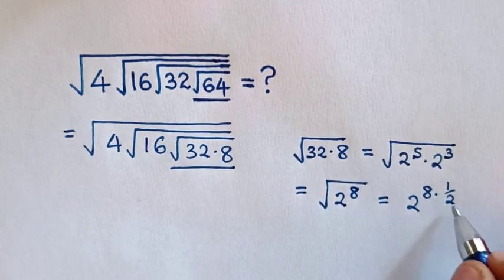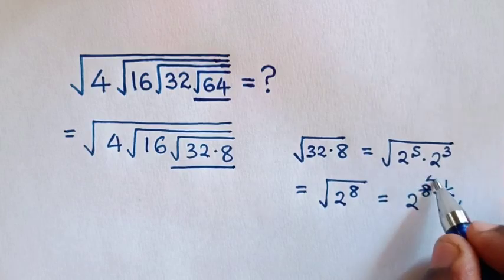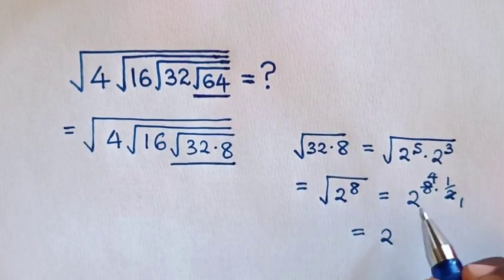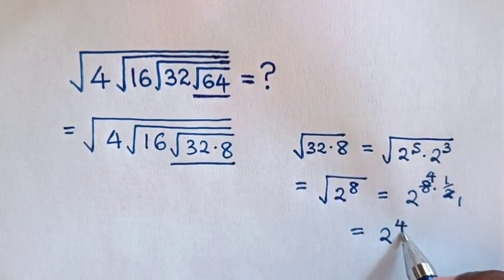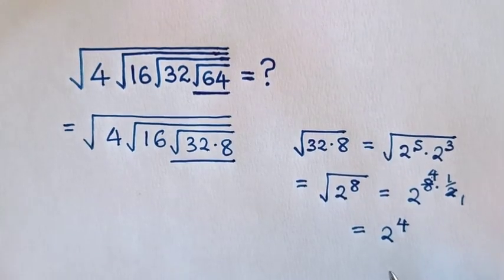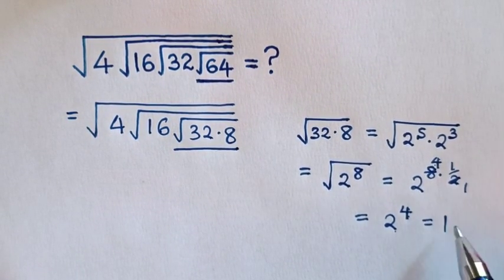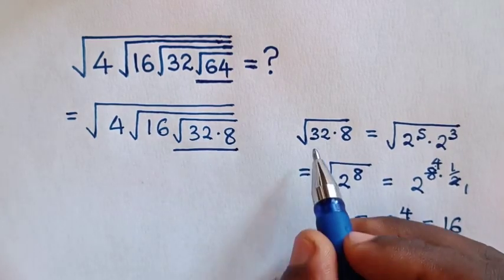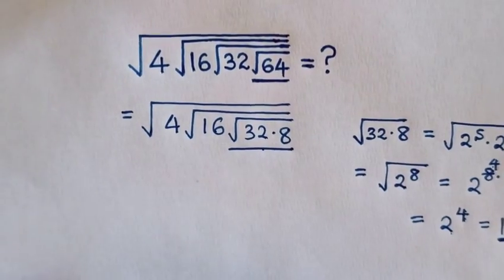Then to simplify, this will cancel — 1 and this by 4 — so it will be equal to 2 to the power of 4 times 1, which is power of 4. And 2 to the power of 4 is equal to 16. So we substitute 16 into here for square root of 32 times 8.